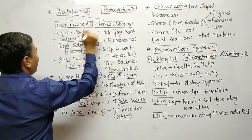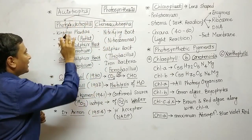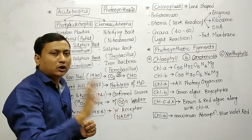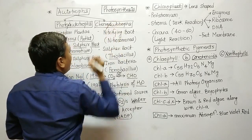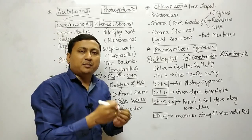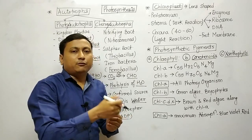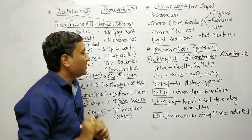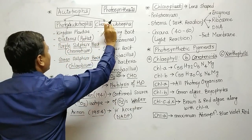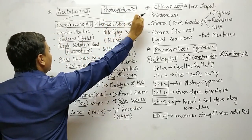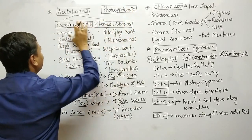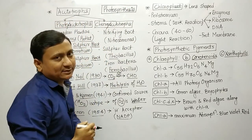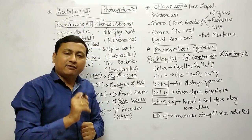Photo-autotrophs are organisms which prepare their food by using solar energy. Chemo-autotrophs are organisms which prepare food by using energy released during chemical reactions. Photo-autotrophs use solar energy, while chemo-autotrophs use chemical reactions. The textbook examples are very important.